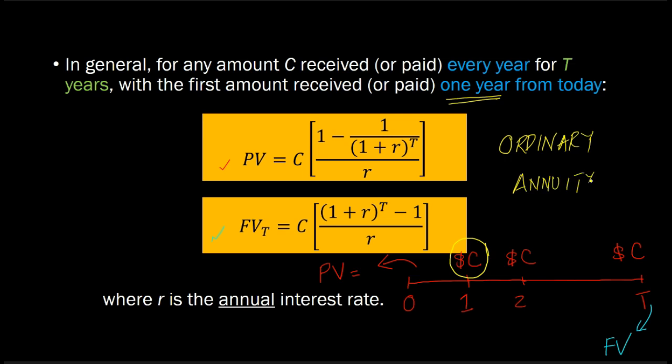It doesn't matter whether you are interested in determining present value or future value of an annuity. What makes an annuity an ordinary annuity is that the first cash flow must be occurring at time period one, or one year from today, if we're dealing with years. These formulas only apply in situations where the first cash flow is occurring one year from today, or when we're dealing with an ordinary annuity.